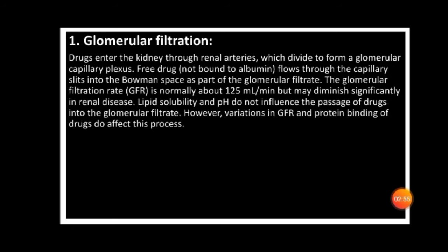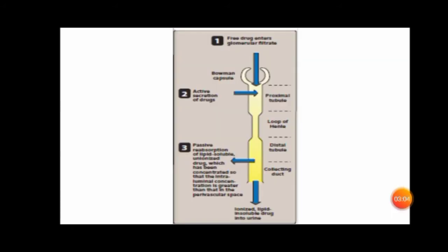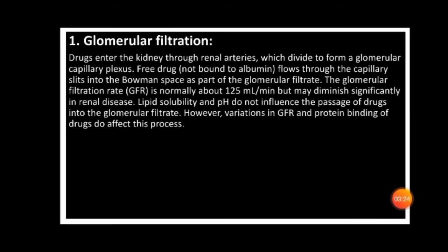First, we have GFR — glomerular filtration rate. Drugs that enter our blood undergo glomerular filtration first. You can look at the Bowman's capsule; in the Bowman's capsule we have glomerular filtration. Drugs come from the body in the blood, and those that are free — unbound — can be filtered. This occurs through the afferent arteriole through glomerular filtration. The normal GFR rate is 125 ml per minute, which indicates normal kidney function.